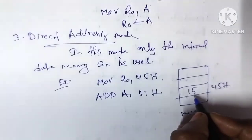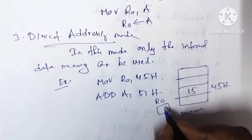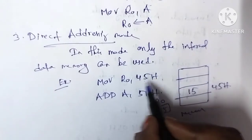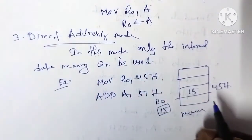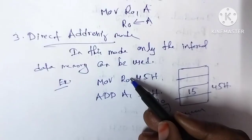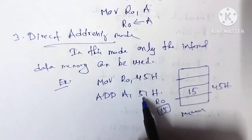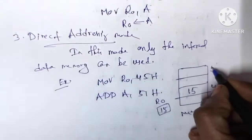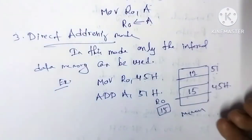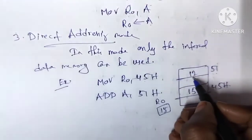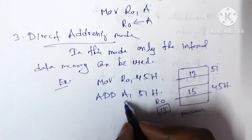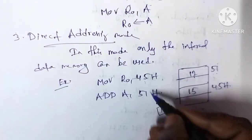For example, 'MOV R0, 45H' — here 45H is a memory location, not immediate data (no hash symbol). The content of memory location 45H is moved to register R0. Next example: 'ADD A, 51H' — memory location 51H contains data, for example the value 12H. That data is added to the accumulator and the result is stored. These are examples of direct addressing mode, where memory locations are used.